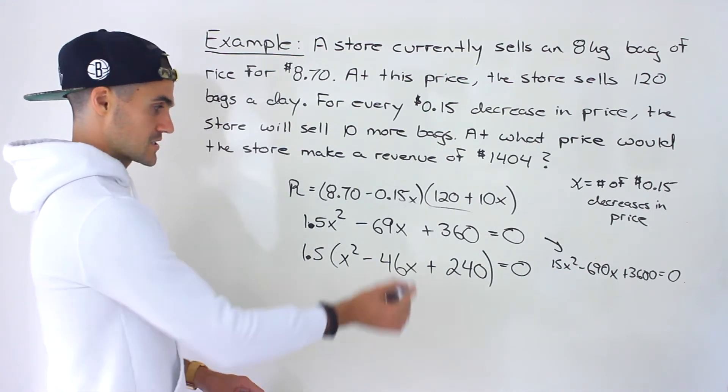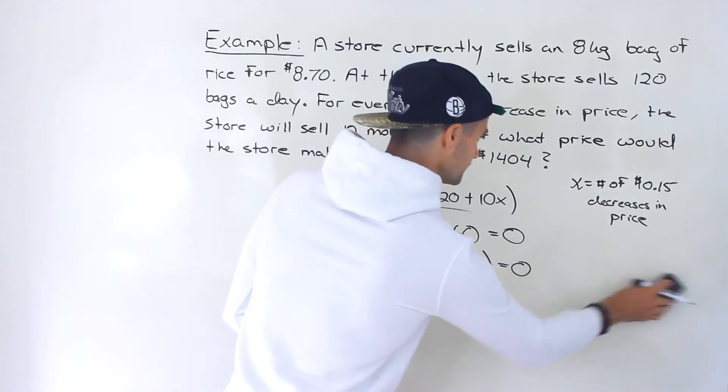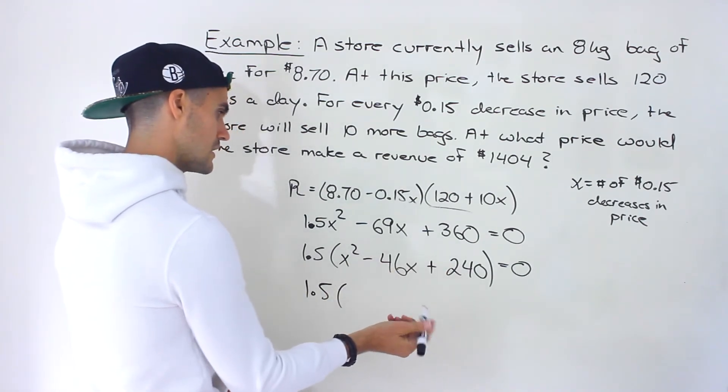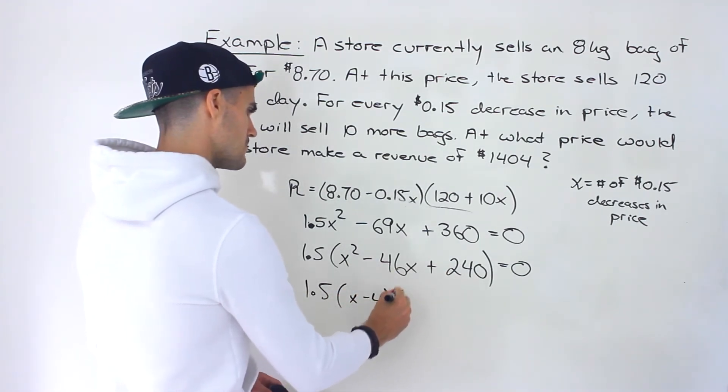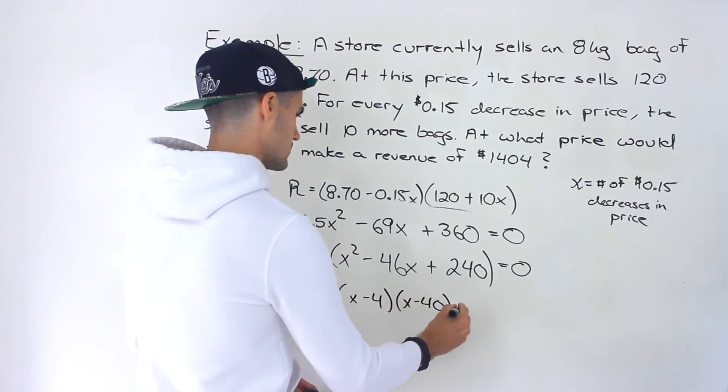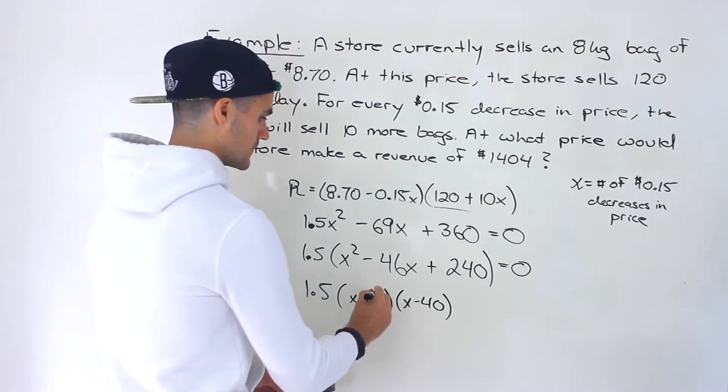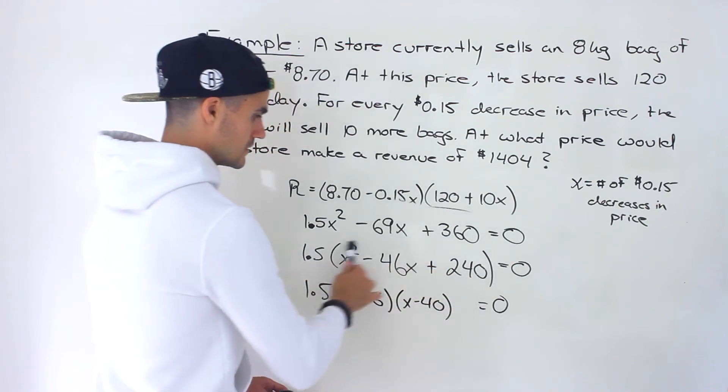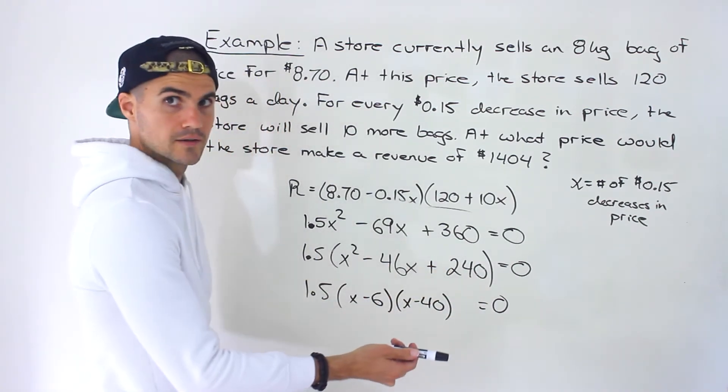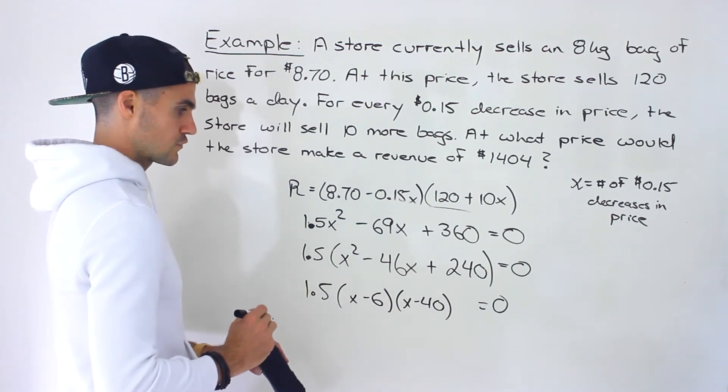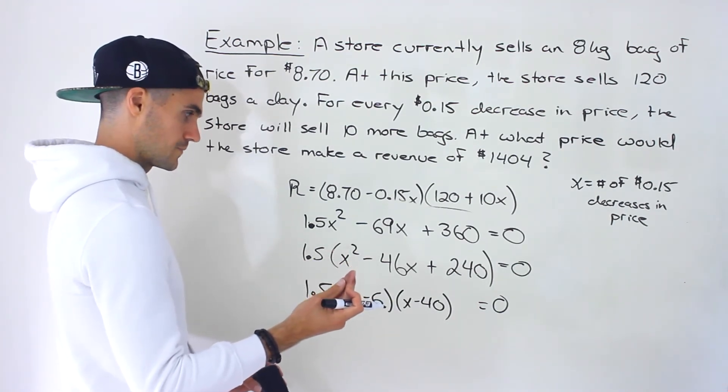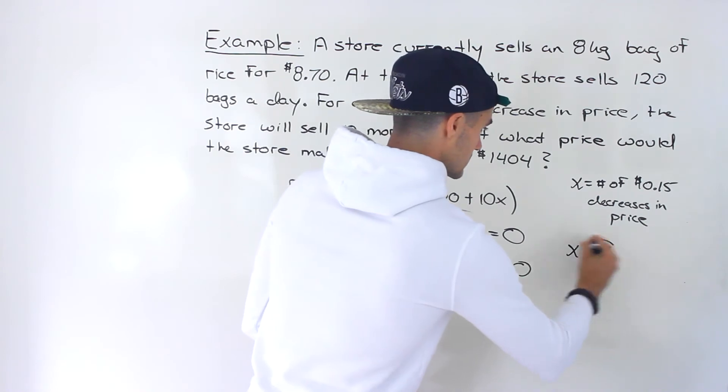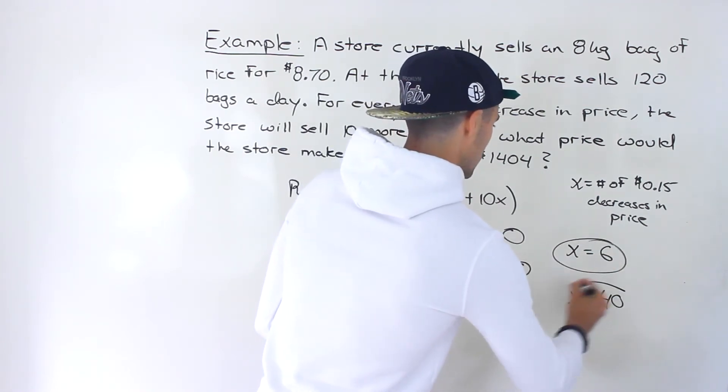But because we ended up with a nice quadratic here by taking out the 1.5, I'm just going to stick to this method. So from here, this actually factors smoothly into x minus 6, x minus 40. And that's going to equal zero like that. This quadratic factors into that right there. If you want to do the work on the side just to make sure, feel free to do the decomposition work. But it does factor into that.